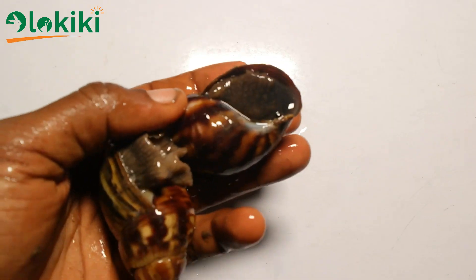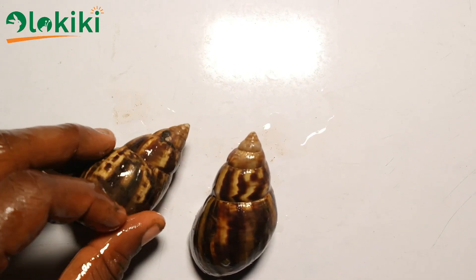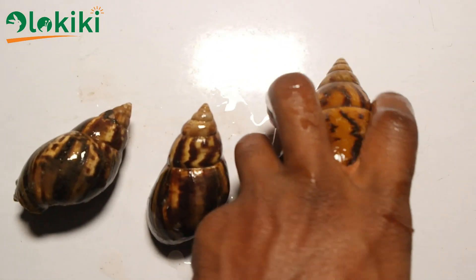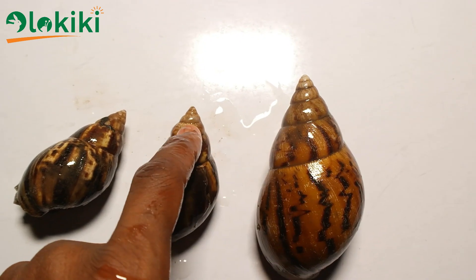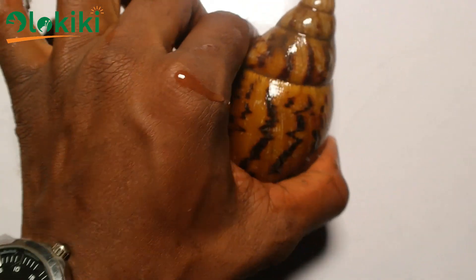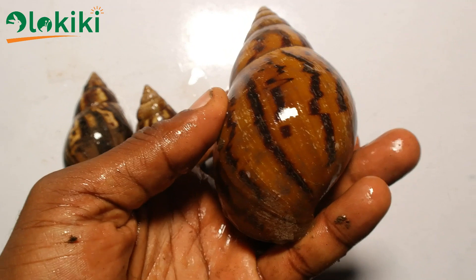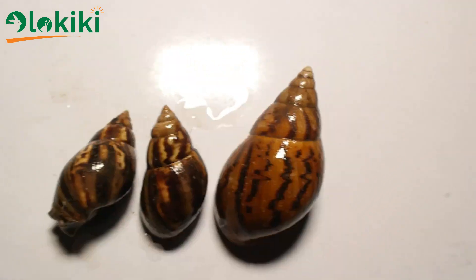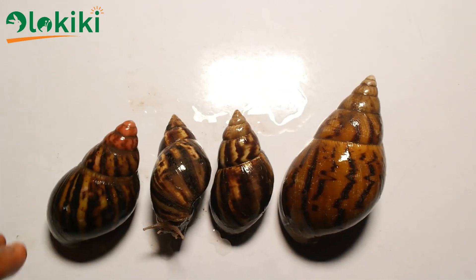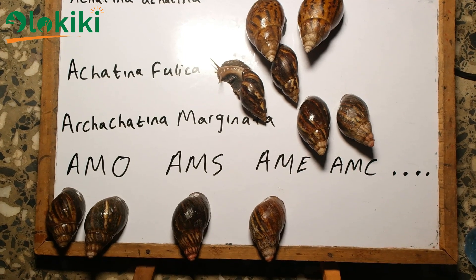To differentiate all these varieties and species, it's better to study their physical characteristics and differences. Looking at the Achatina fulica and comparing it with the Achatina achatina, you can see they both have pointed tips, but the major difference is that the pattern of Achatina achatina looks like that of a tiger while Achatina fulica's is different. Achatina achatina also grows bigger than Achatina fulica. Bringing Achatina marginata into the picture, you can see it has a broader tip when compared to the fulica and the achatina achatina — those are the major differences between these species.